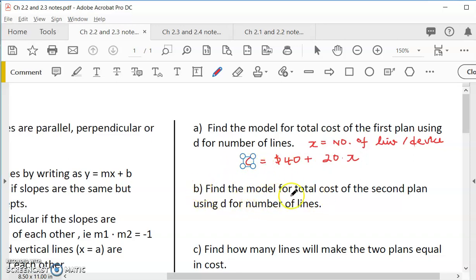Part B is find the model for the total cost of the second plan. So we use the same cost. Basic fee is zero. X is number of line. It's the same. But it is $30 per line. So we get that.